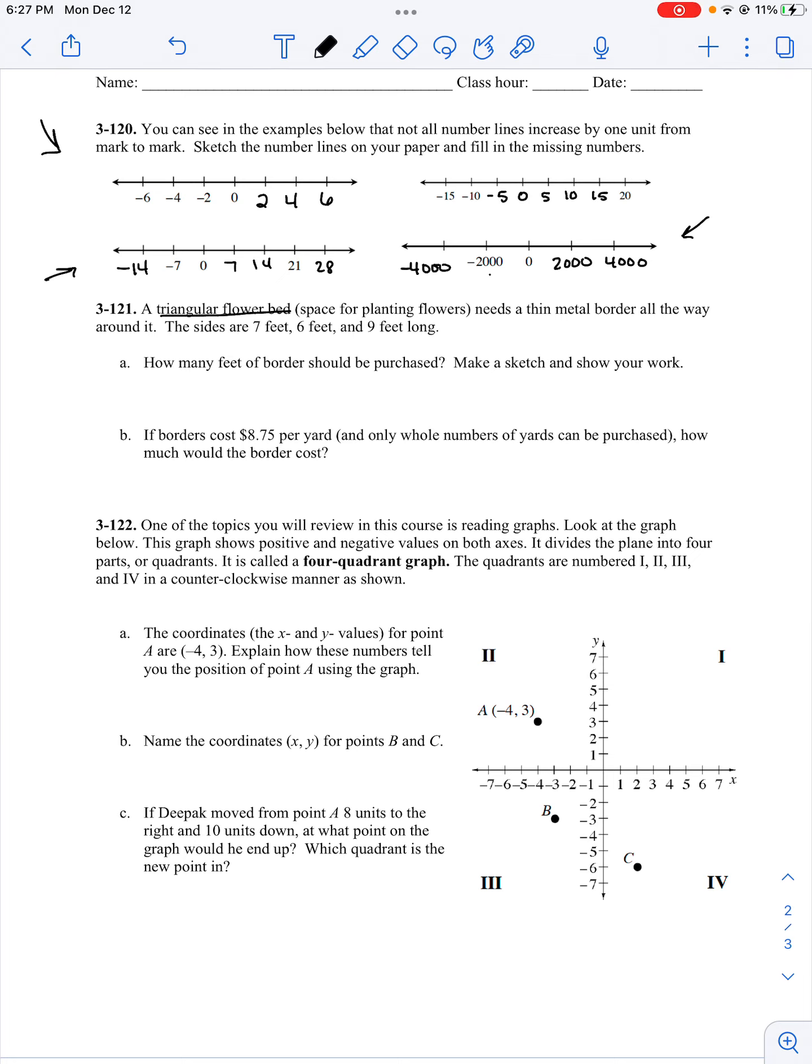Problem 121: We have a triangular flower bed. Needs a thin metal border all the way around it. The sides are 7 feet, 6 feet, and 9 feet long. If I draw a picture, I have 7 feet, 6 feet, and 9 feet. I want a border. Which means that I have to find the perimeter. The perimeter is all the sides added together. So, 9 plus 7 is 16, plus 6. 6 plus 6 is 12. Carry my 1. 1 plus 1 is 2. So, we need 22 feet.